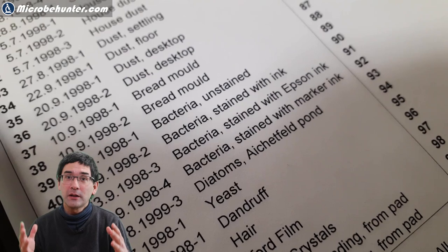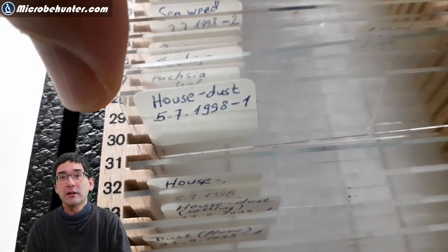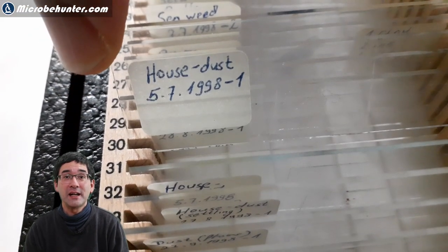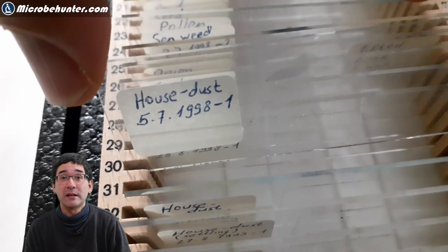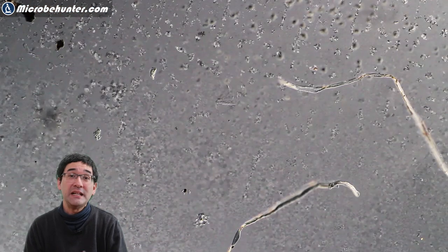At that time I essentially made a whole bunch of permanent slides using pretty much anything I could find. I was of course also collecting dust samples, pollen grains, insect wings, all sorts of things. And then all of a sudden I saw, in one of those dust samples, I found this strange structure.